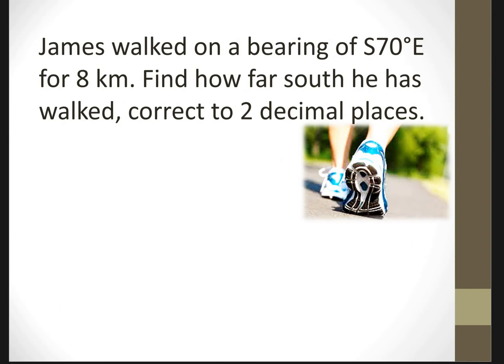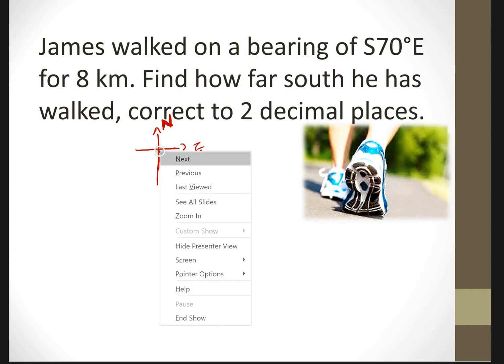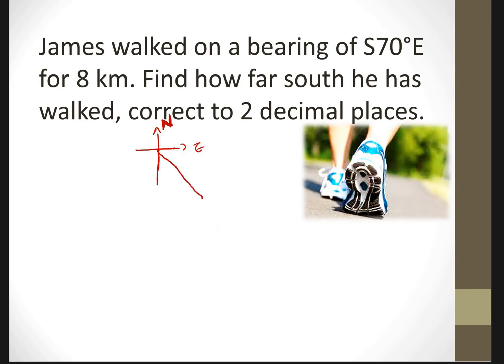Next problem: James walked on a bearing of South 70 degrees East for 8 kilometers. Find how far south he has walked. First of all, draw a diagram. It's going down south — South 70 East — so we draw a reference point. This is North. It goes south and then east this way, so 70 degrees from south toward east. This is 70 degrees.